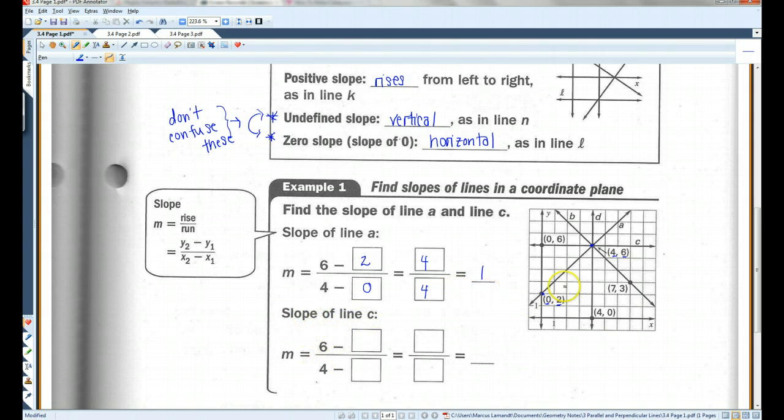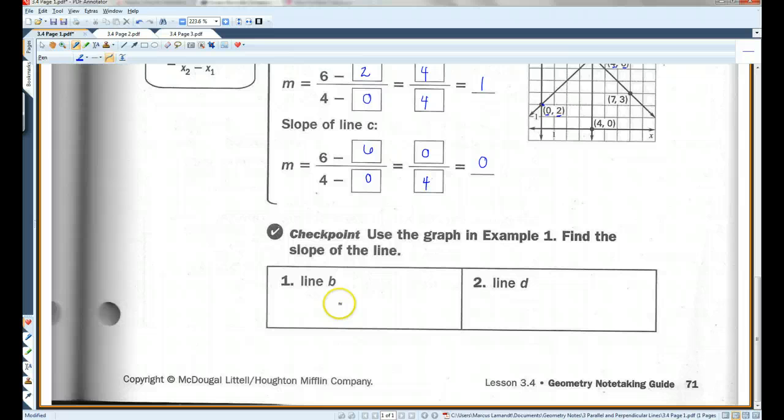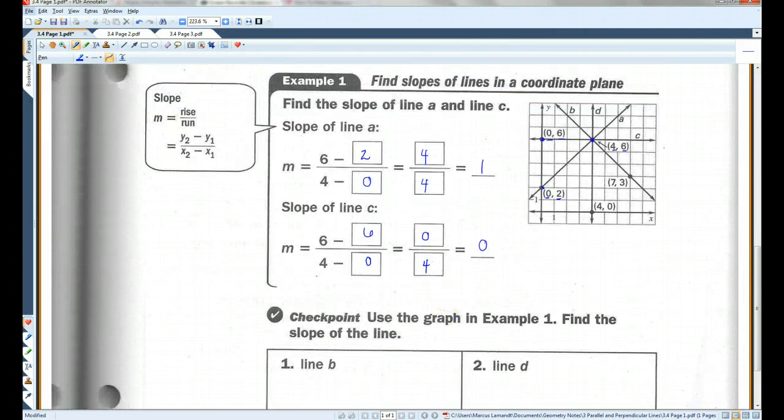Let's take a look at line C. We could use this point again, because that's also on this line, and this point. The Y values, we have six and six. So I have six minus six. X values, I have four and zero. Six minus six is zero. Four minus zero is four. Zero divided by four is zero. And that makes sense, because it is a horizontal line. And we know that horizontal lines have a slope of zero. I'll let you guys do these two. Let's go on to page two.